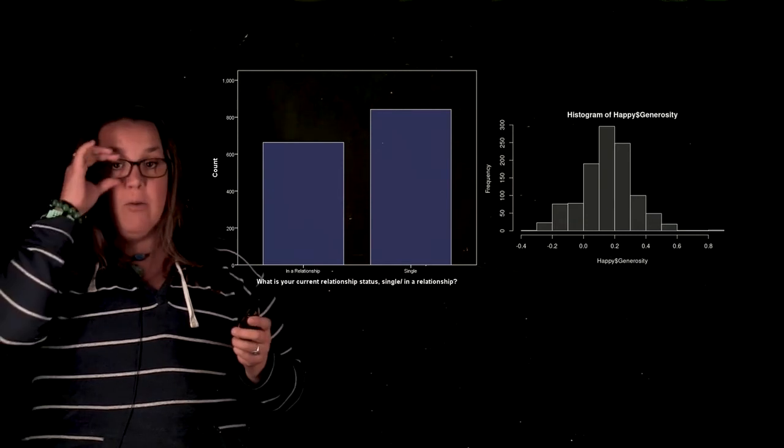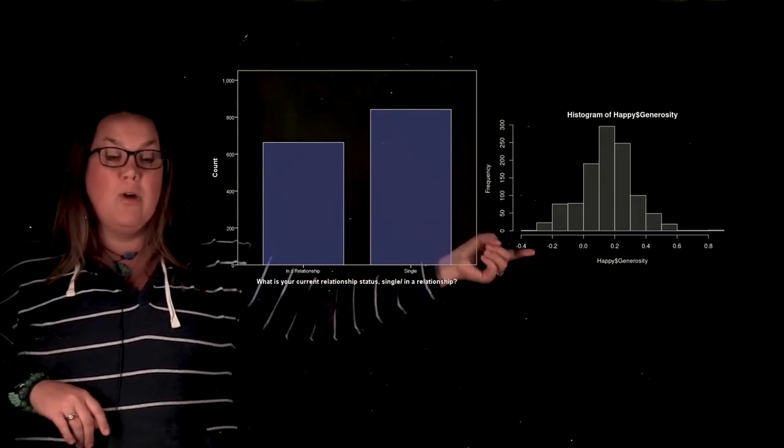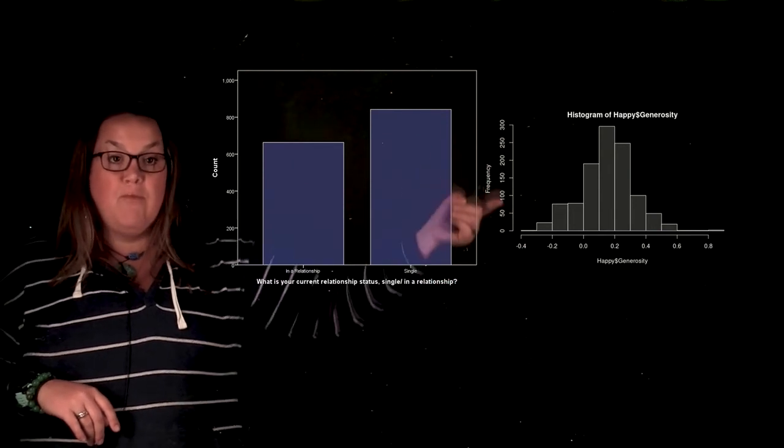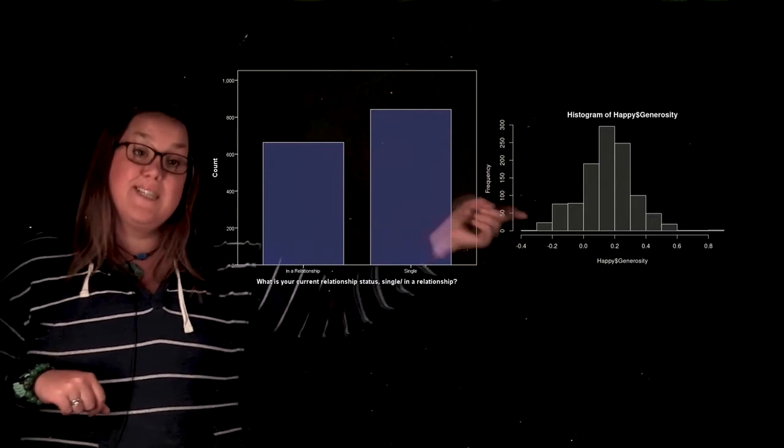We have a bar graph representing categorical data, which you can identify with the x-axis, and then the histogram. And it can be confusing because it has the same y-axis, but the histogram's x-axis is a number line. So that's how you know the difference between the two.